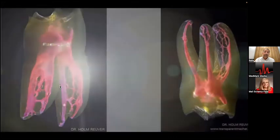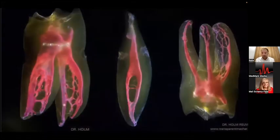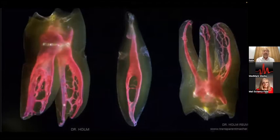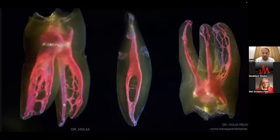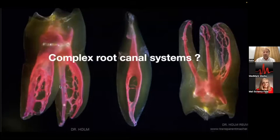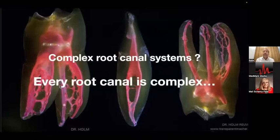I want to show you some fantastic pictures of different tooth groups — lower molar, upper molar, front tooth, and lower front tooth. The red thing you can see is the pulp. I always want to show colleagues how complicated the pulp is and therefore how complicated our daily work is. I always get questions about complex root canal systems, and my opinion is that every root canal is in one way or another complicated — very complex root canal systems are what we deal with daily.